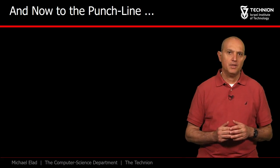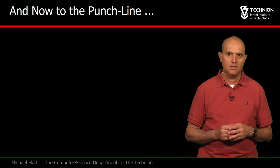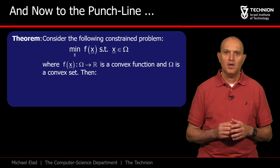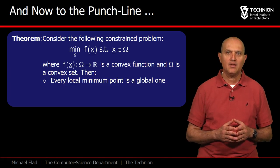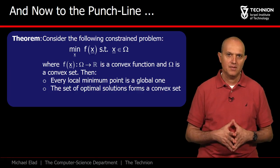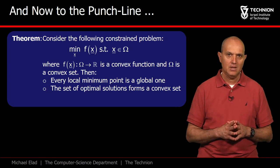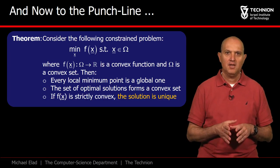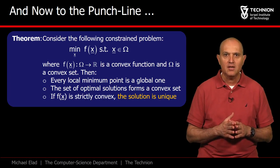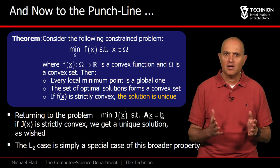At this stage you might be wondering, why have we gone into this discussion in the first place? So here is the answer. When minimizing a convex function over a convex domain, we get that there are no local minima points, and all the optimal solutions concentrate in a convex set. However, far more important for us is the following claim: if the function is strictly convex, the optimal solution is unique.